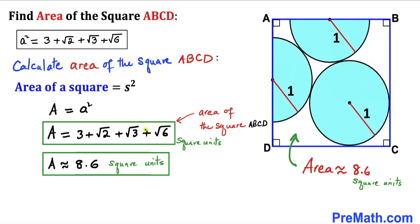Thus the area of square ABCD is 3 + √2 + 2√3 + √6, which is approximately 8.6 square units. Thanks for watching and please don't forget to subscribe to the channel for more exciting videos.